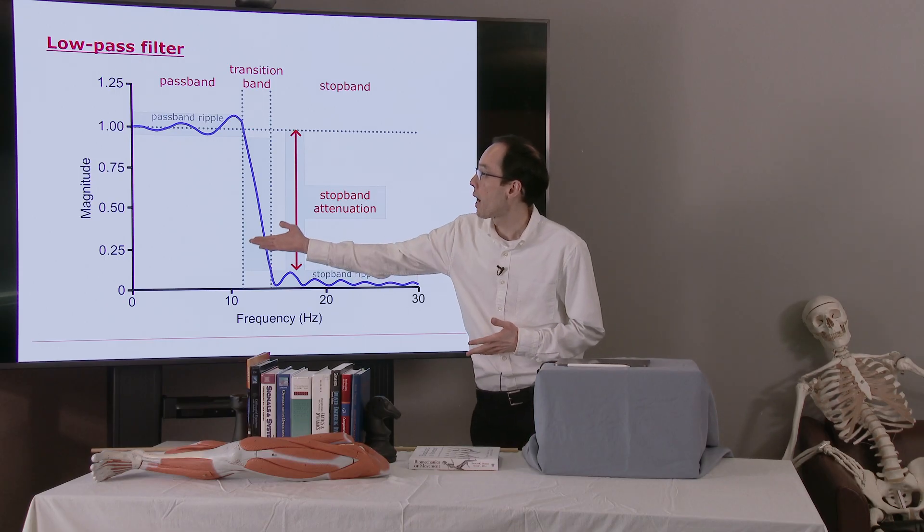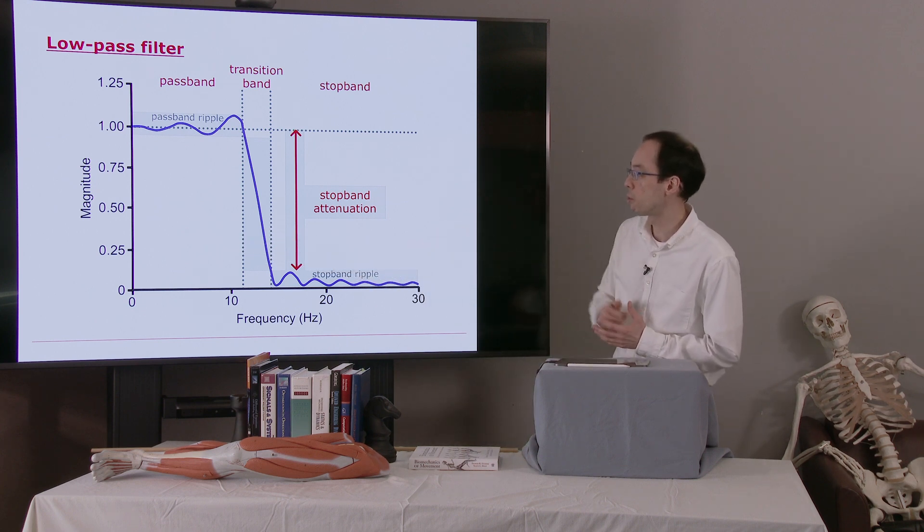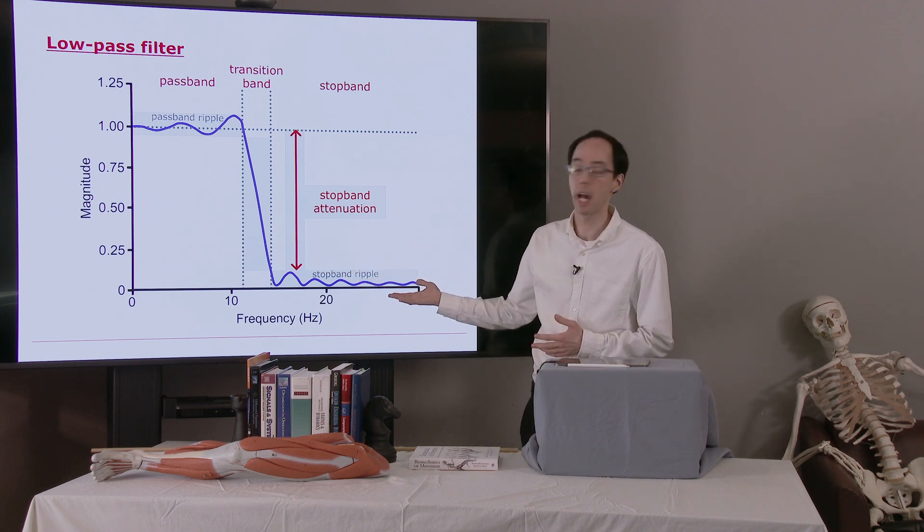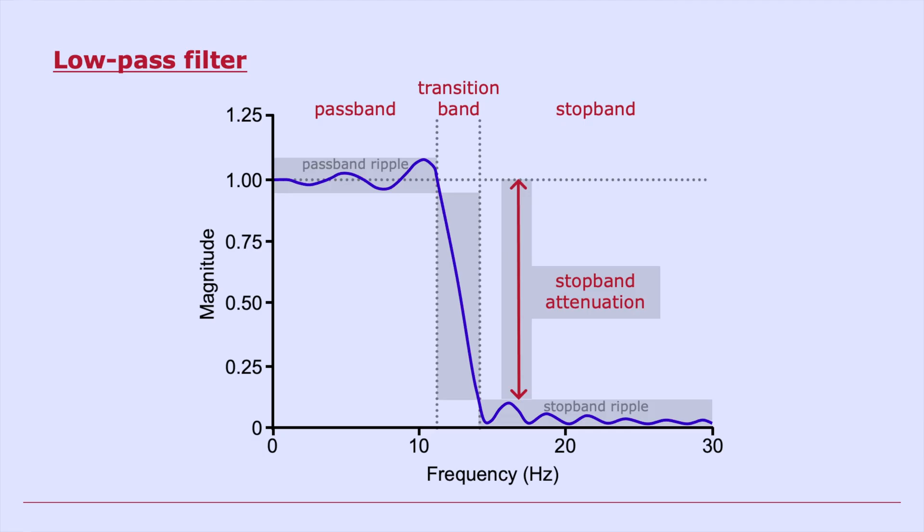So we have a low pass filter here. On the low frequency range, we have a magnitude that's around 1. In the high frequency range, we have a very low magnitude, which means that when we apply the filter, any parts of the signal that have high frequency will end up with a very low amplitude.